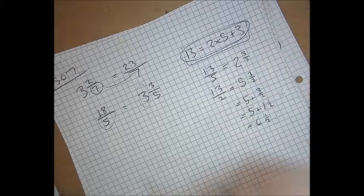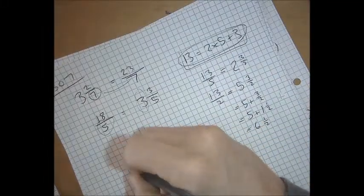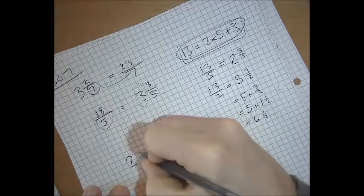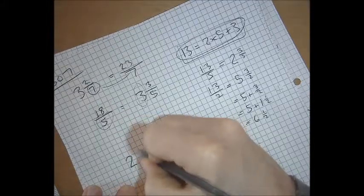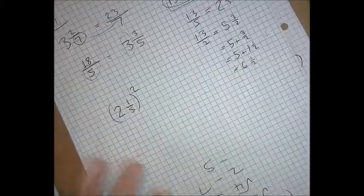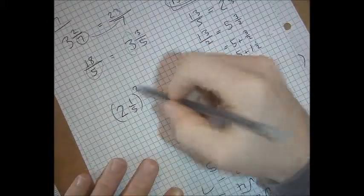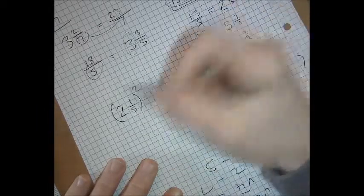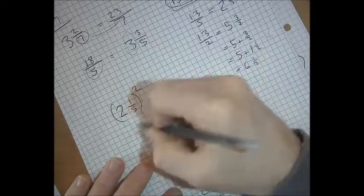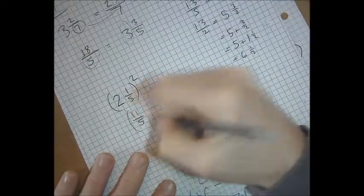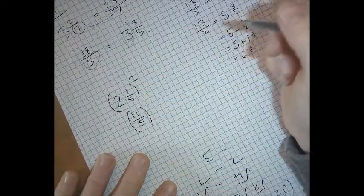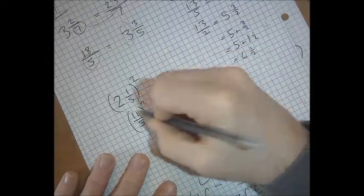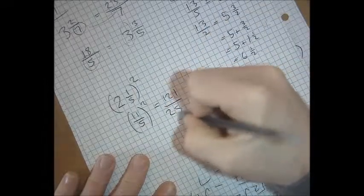Now one context that this comes up in is when you're powering things. That squaring cannot be separately applied to the 2 and the fifth. You cannot just square the 2 and then square the fifth and write them next to each other. You must instead convert to improper fractions first. Then you can square the top and the bottom separately.